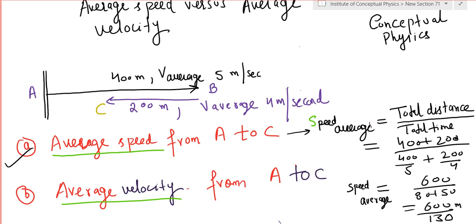Both appear to be the same thing. So this is a numerical in which a body starts from point A, moves towards east direction towards the point B, covers a distance of 400 meters at an average velocity of 5 meters per second, and then this body reverses its direction.